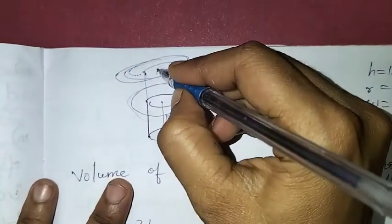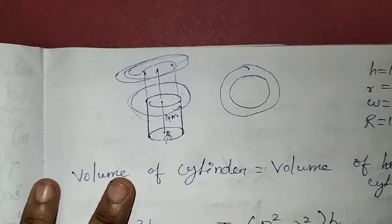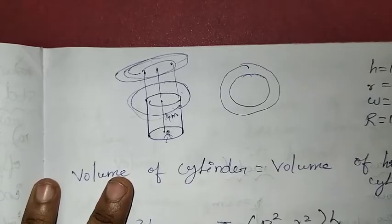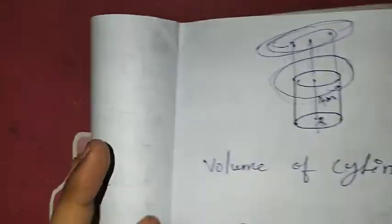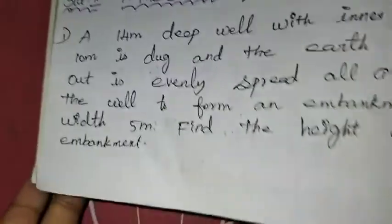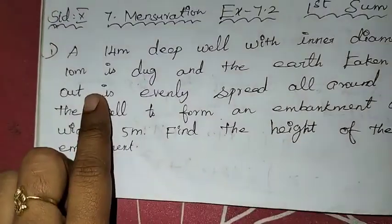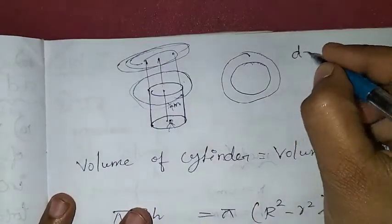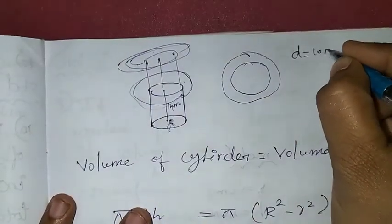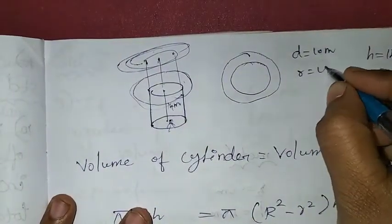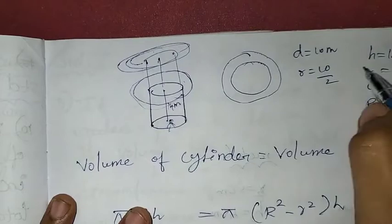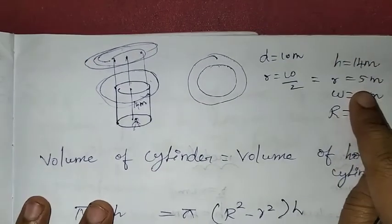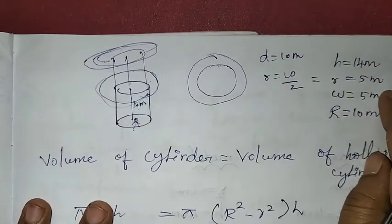Now we need to identify the given information. First, the diameter: the diameter is 10 meters. The radius is 10 divided by 2, which is equal to 5 meters. So the inner radius is 5 meters.